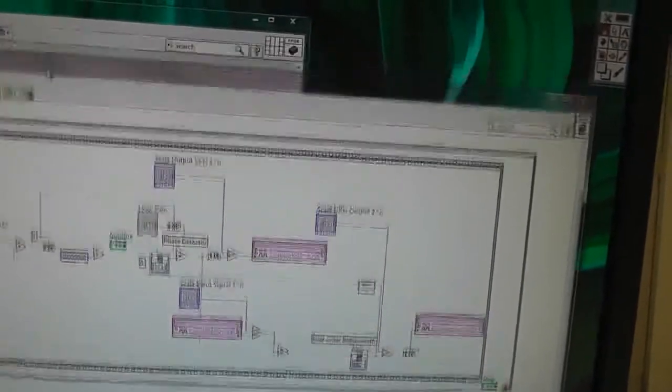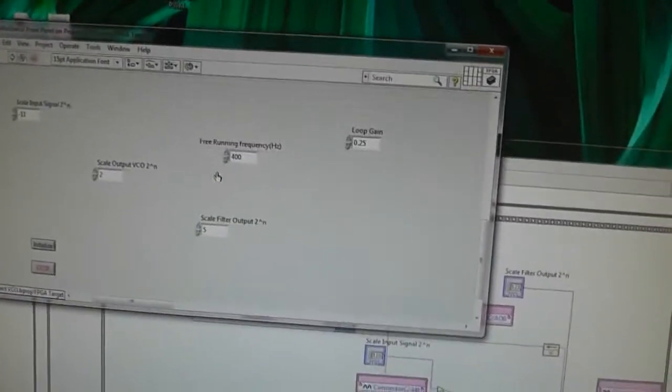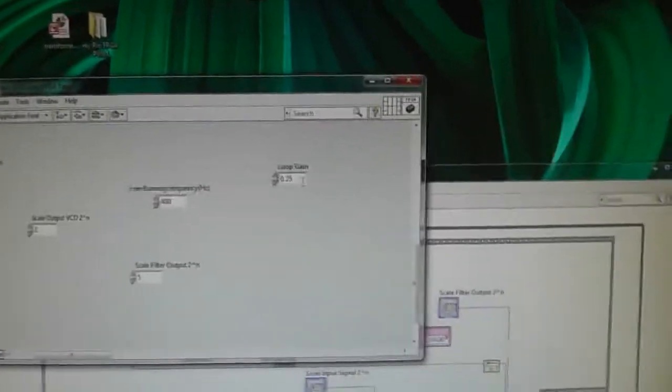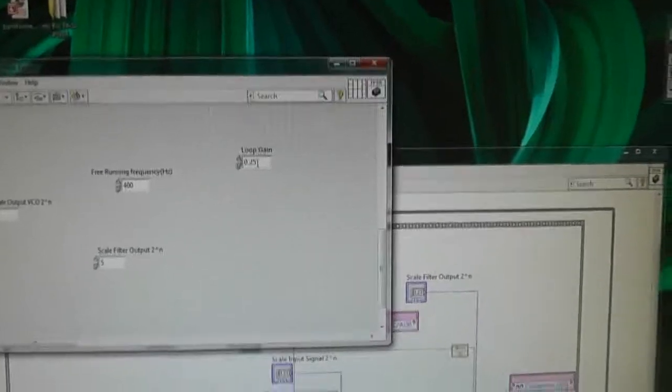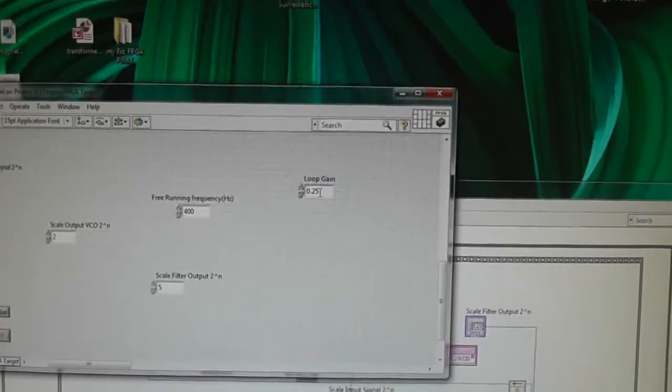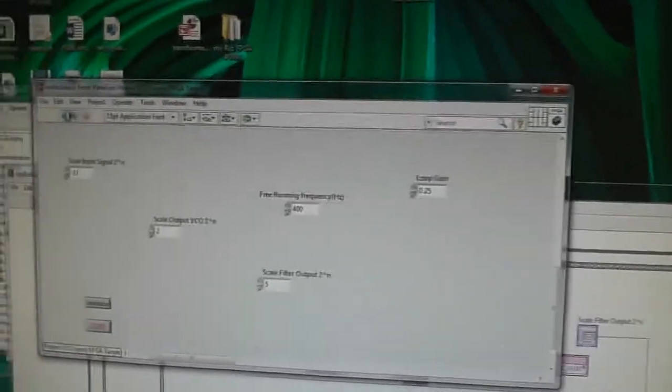Let's just run it. There's a front panel, there's a free running frequency, 400 hertz, and these are just scaling things. I've got a control on the loop gain which I found by a bit of trial and error. I'll talk about that in a minute. Let's run it. It's been compiled before, so we go back to the oscilloscope.